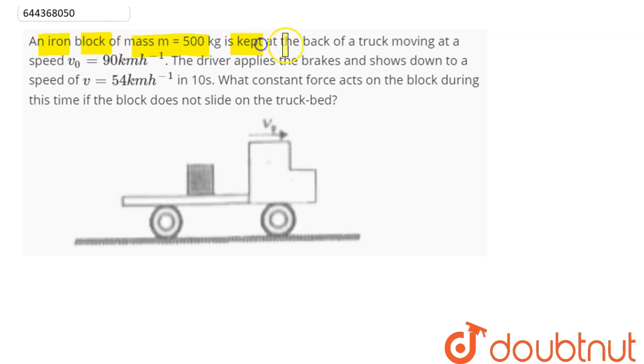An iron block of mass 500 kg is kept at the back of a truck moving at a speed v₀ given as 90 kilometer per hour. The driver applies the brakes and slows down to speed of 54 kilometer per hour in 10 seconds. What constant force acts on the block during this time if the block does not slide on the truck bed?